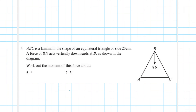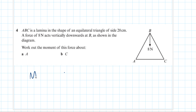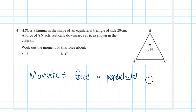Hello and welcome to this video that goes through some moments questions that I have been sent. The first question is ABC is a lamina in the shape of an equilateral triangle of side 20cm. A force of 8 Newtons acts vertically downwards at B. The formula for moments is equal to force times perpendicular distance.